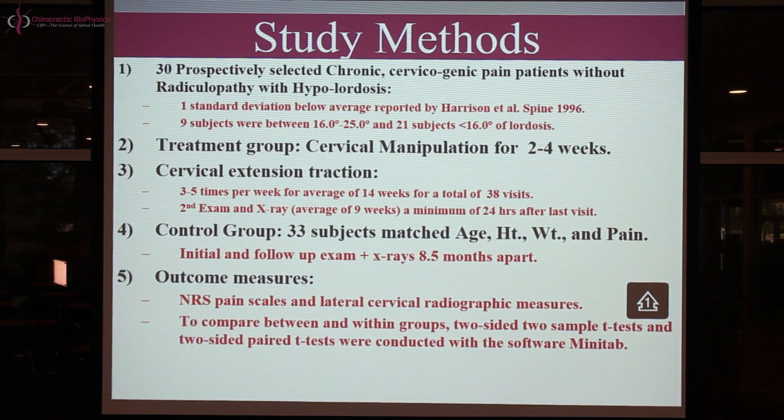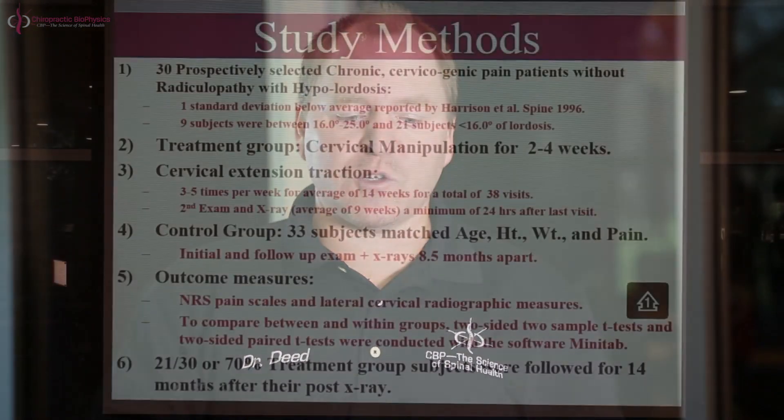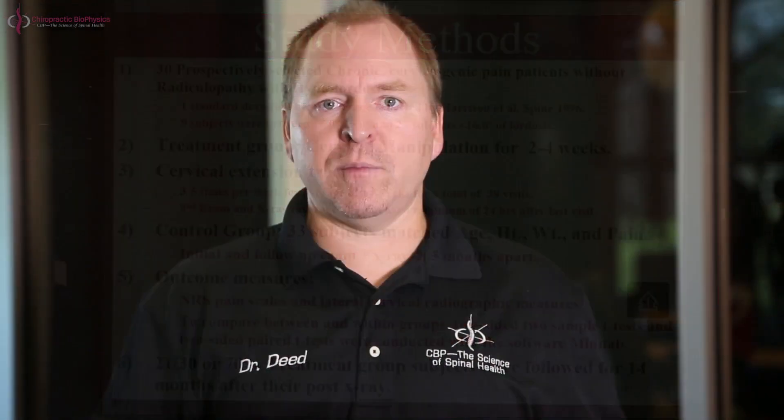We also followed the treatment group subjects for another 14 months. At the end of the 38 sessions, subjects stopped active care and were placed on a maintenance care program, recommended to come in once a month or once every other month. 21 of the 30 subjects, or 70%, made it to the long-term follow-up — a 30% dropout. The average number of visits was just under once every two months, so subjects came in for periodic maintenance over the 14-month follow-up.